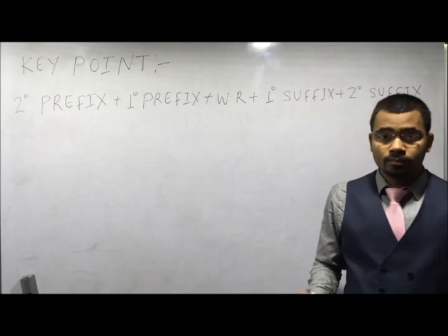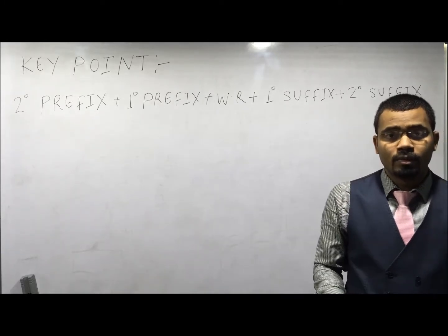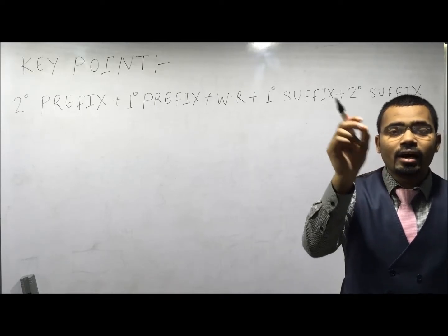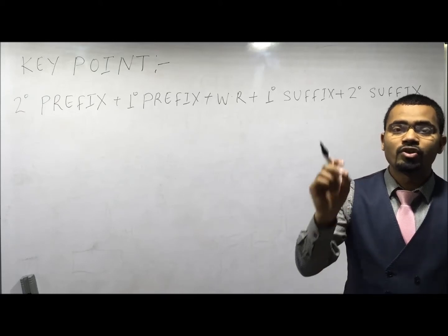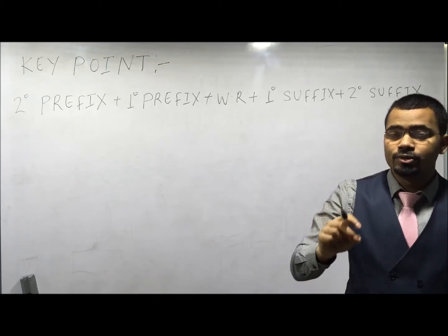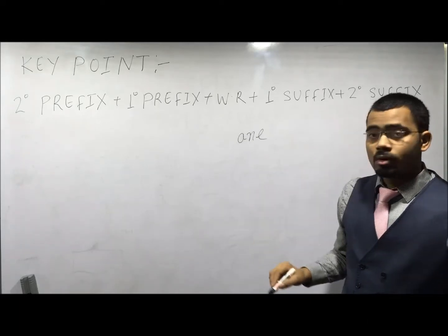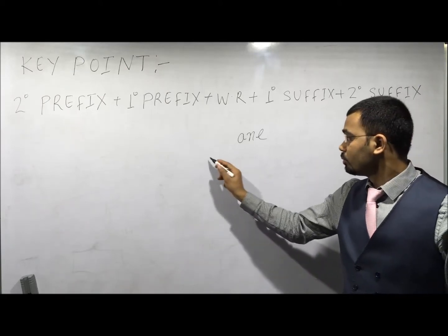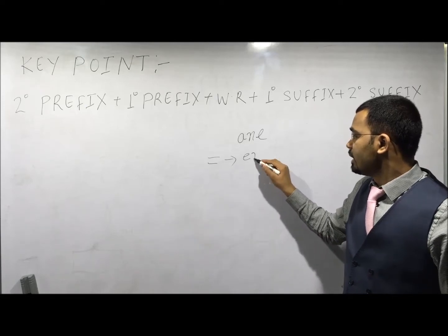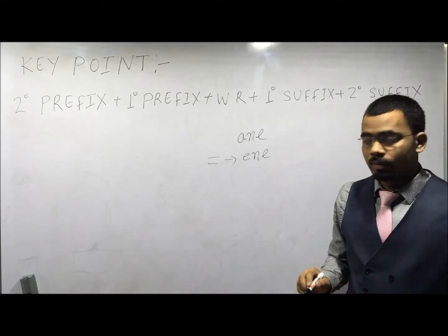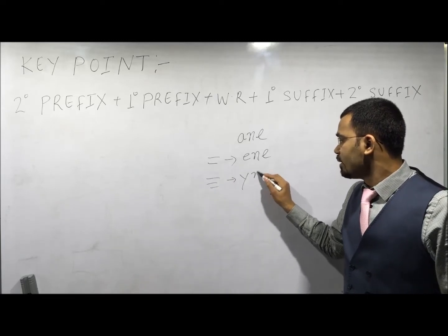Primary suffix describes the saturation and unsaturation nature of the parent chain. For a saturated parent chain we use -ane. For an unsaturated parent chain, for a double bond we use -ene, and for a triple bond we use -yne.